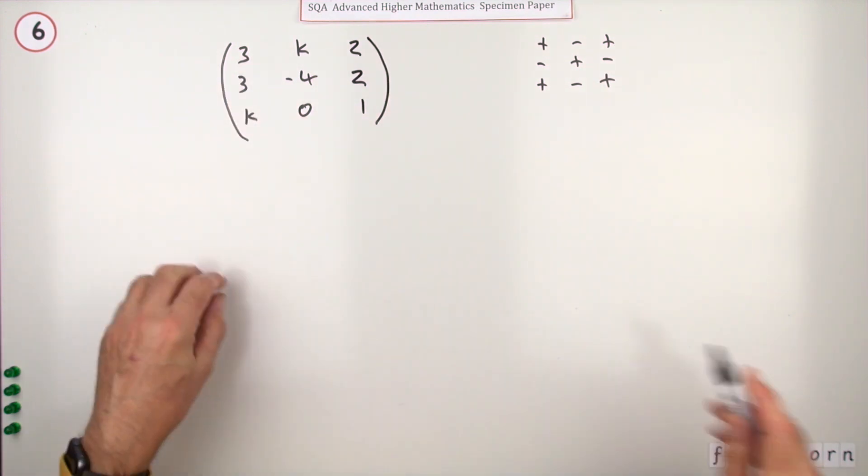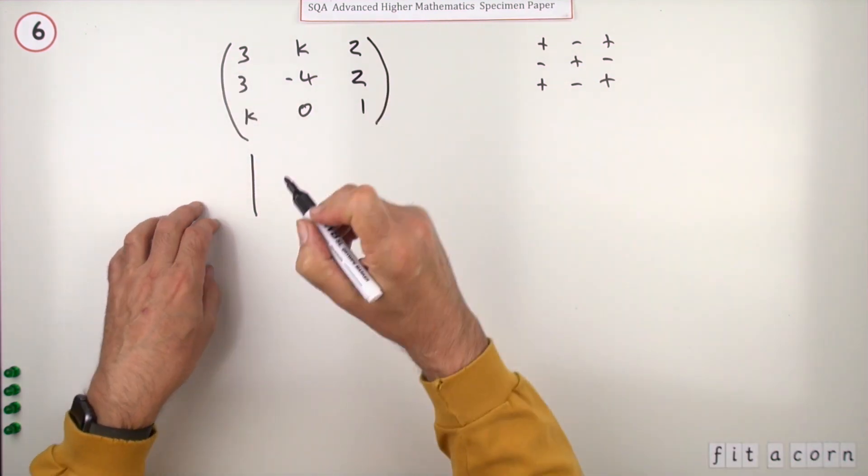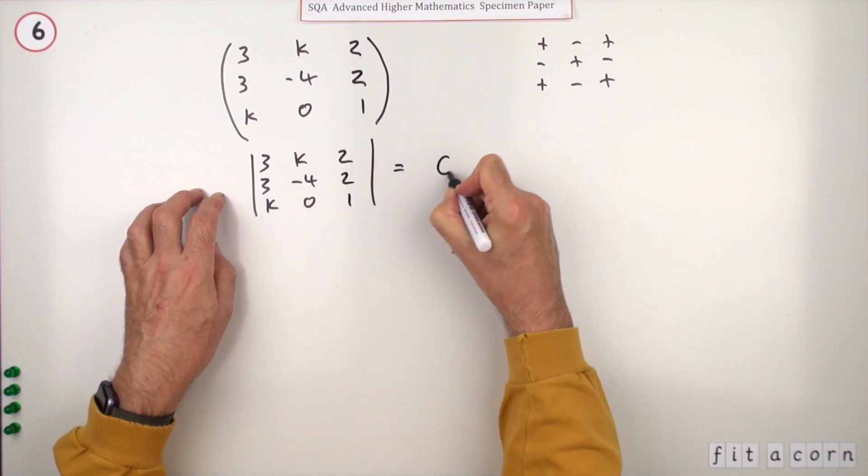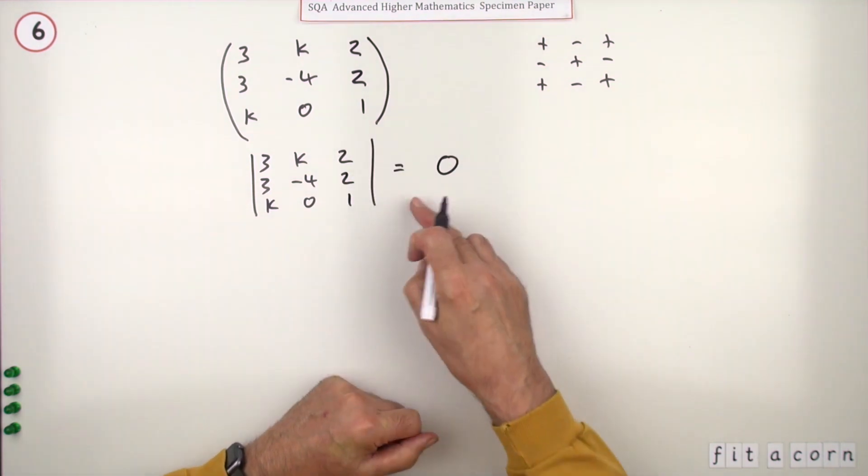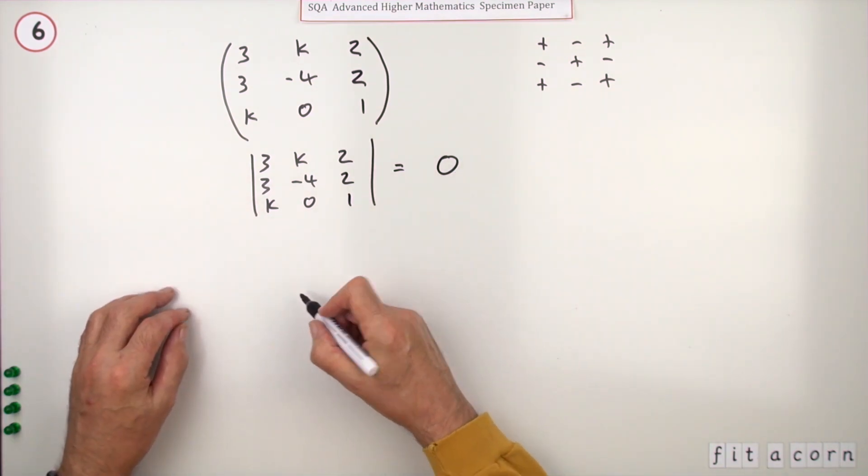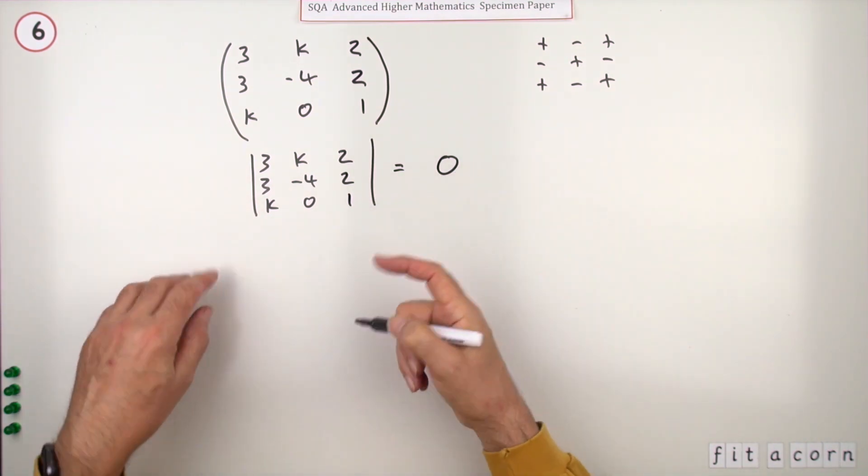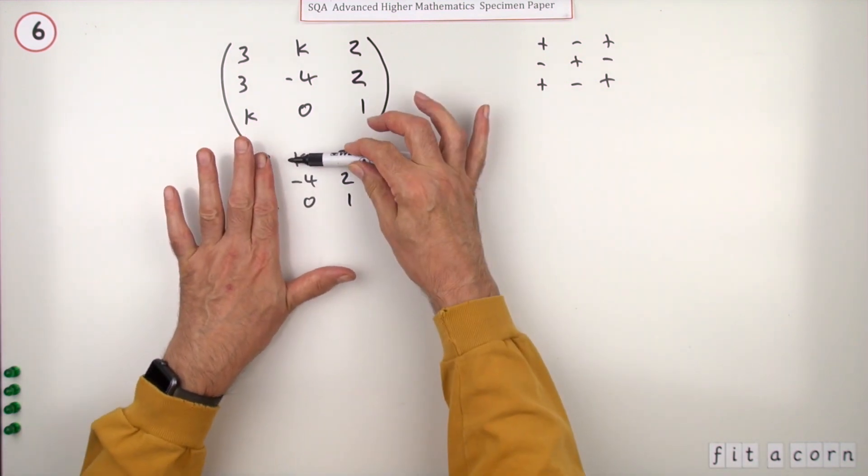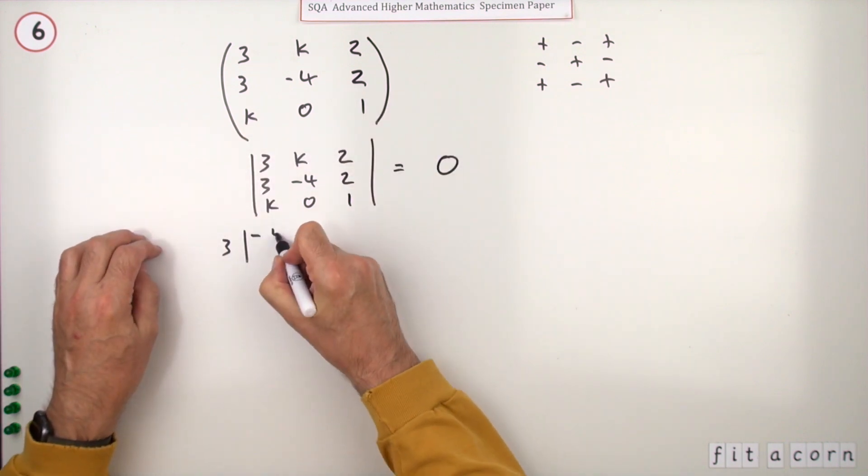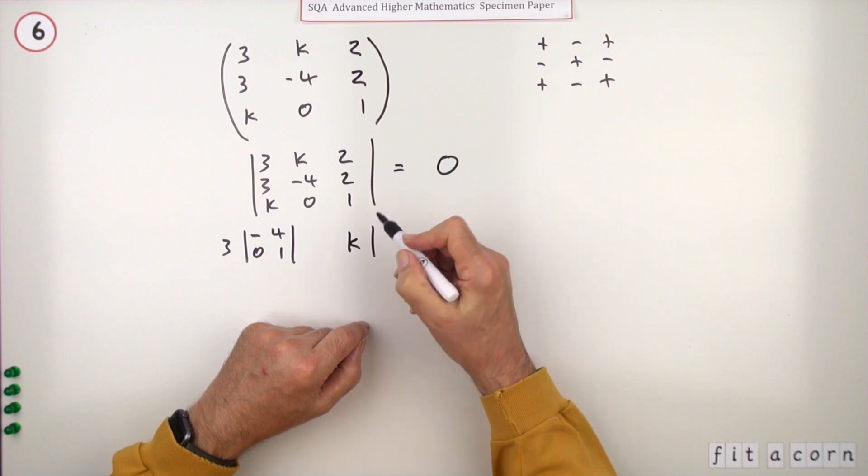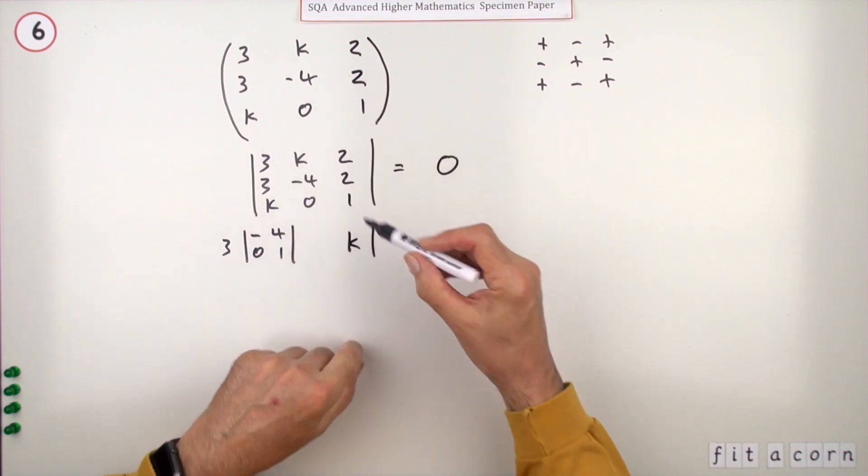The first part would be: it's singular if the determinant of the matrix is equal to zero. Well that should have been the first mark but that's not actually given the mark. If you use the top row, it'll be 3 times its minor - knock out the row and column: negative 4, 2, 0, 1 - k times its minor: 3, 2, k, 1.